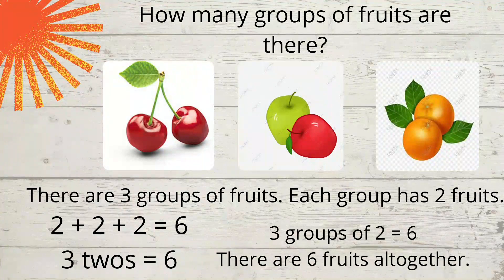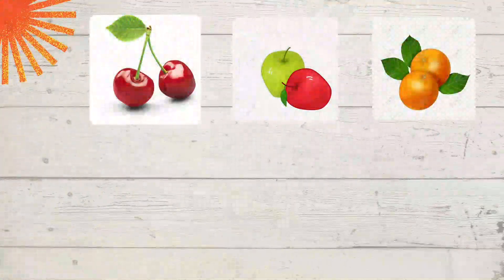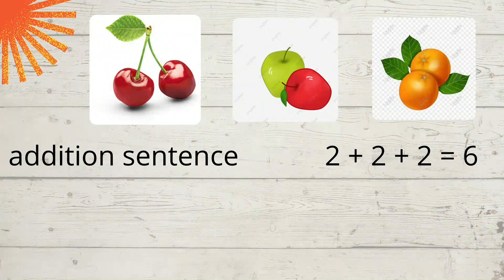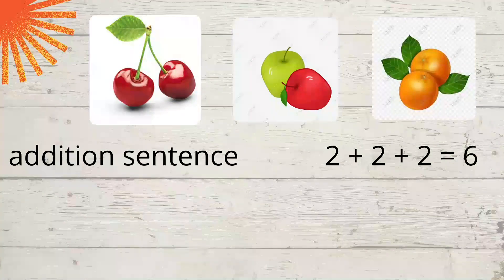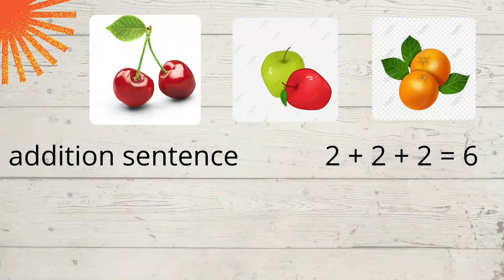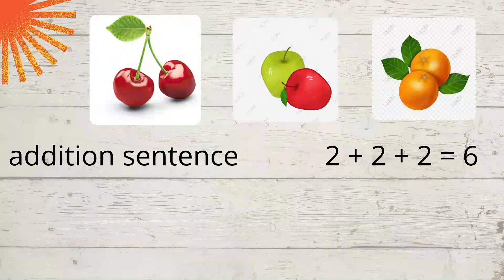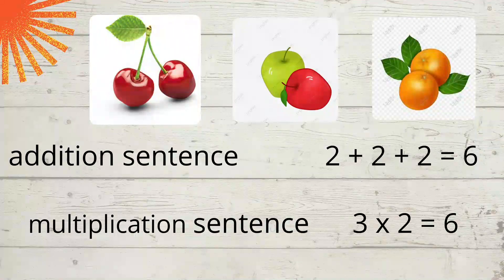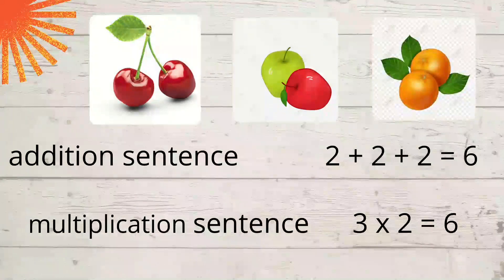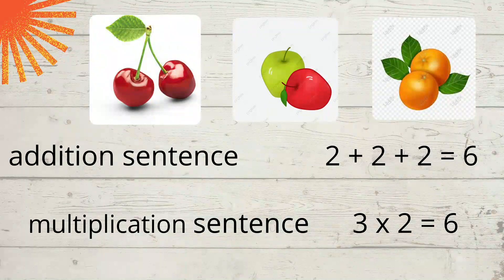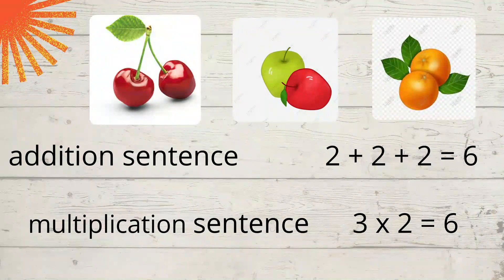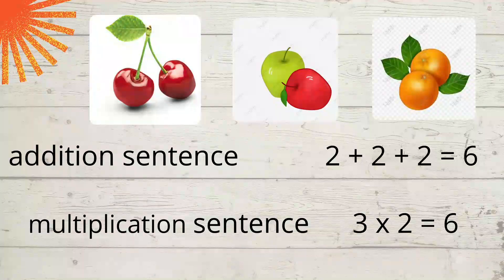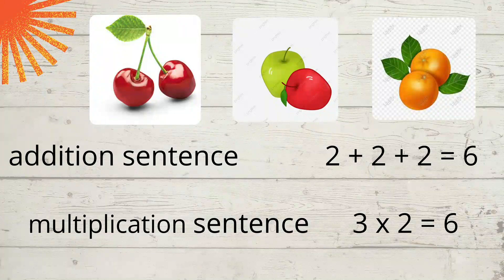Now your addition sentence for this illustration will be 2 plus 2 plus 2 equals 6. And the multiplication sentence is 3 times 2 equals 6. 3 because there are 3 groups, right? And 2 because there are 2 objects in each group or in each set. And then 6, that is the total number of fruits.